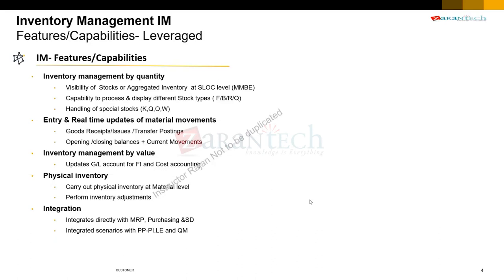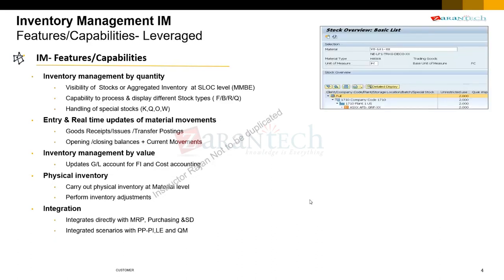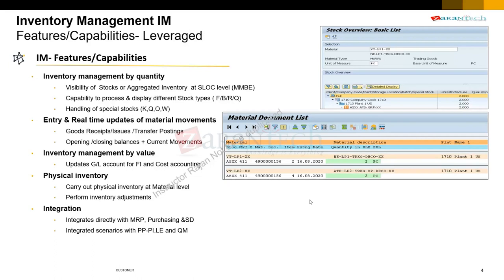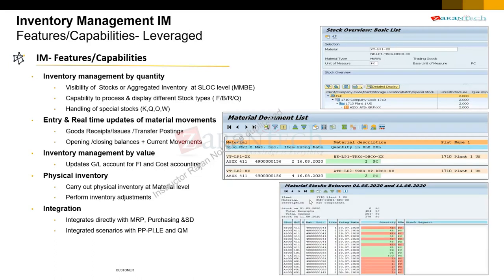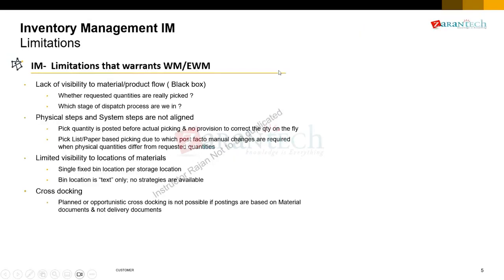Key IM reports include the stock overview MMBE, the MB51 material document list, and the MB5B report where you can see stock movements in a given time window — green for goods receipts, red for goods issues or transfers.